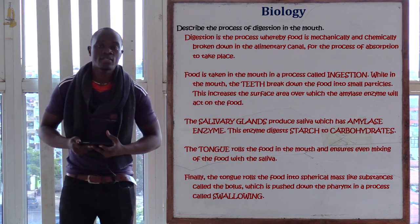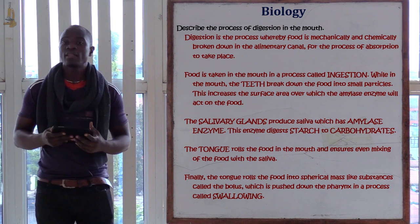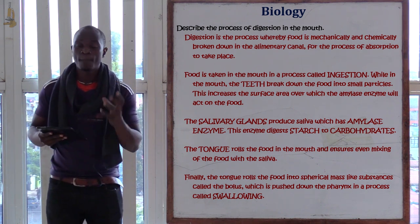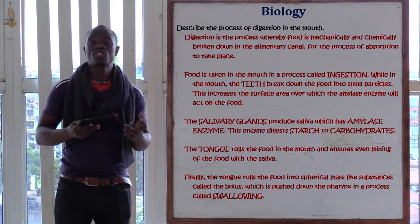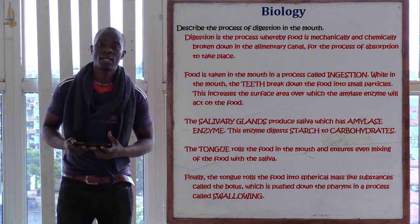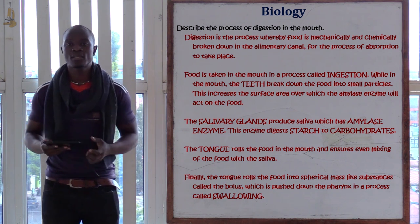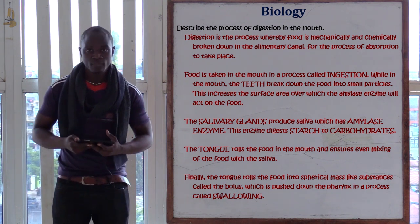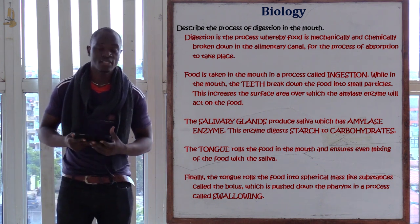After the amylase enzyme has acted on the food, the tongue rolls the food into spherical structures referred to as bolus. After rolling them into bolus, the tongue pushes the bolus onto the gullet, and that completes digestion in the mouth.